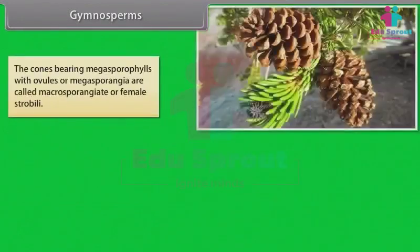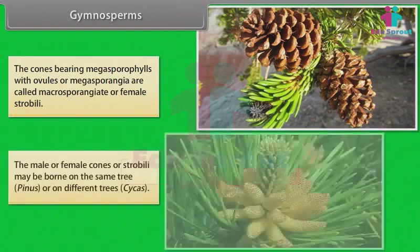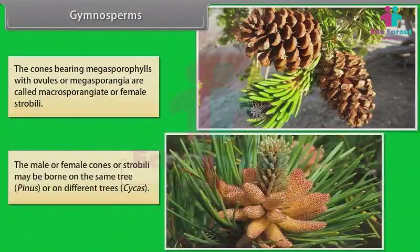The cones bearing megasporophylls with ovules or megasporangia are called macrosporangiate or female strobili. The male or female cones or strobili may be borne on the same tree, as in Pinus, or on different trees, as in Cycas.